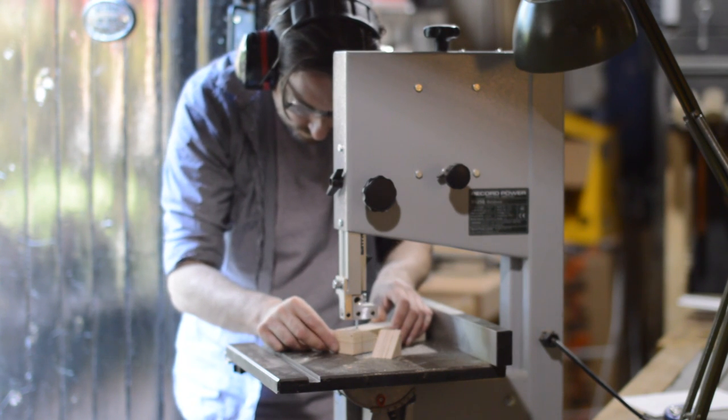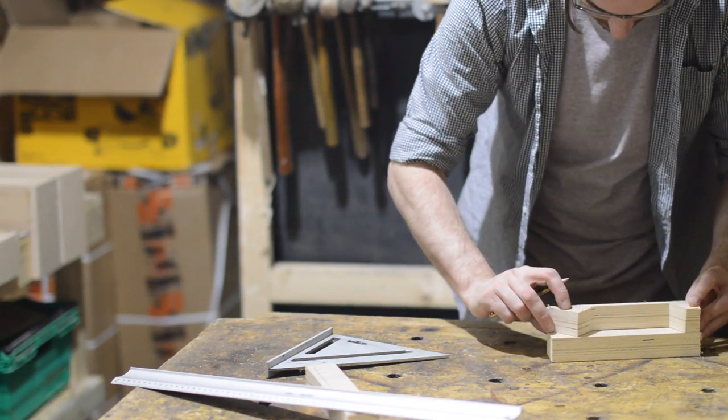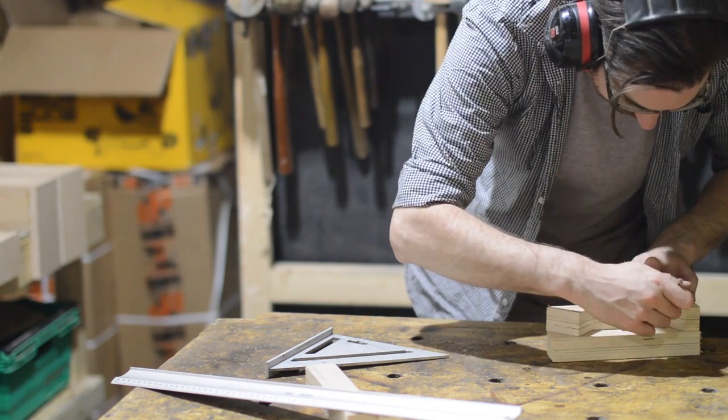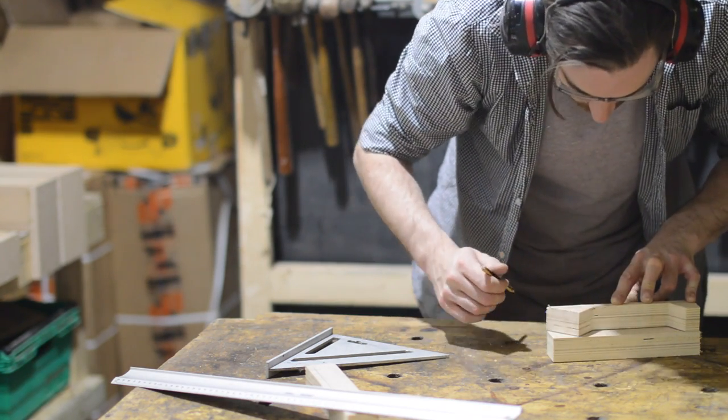I think to apply enough clamping pressure to my project I need four of these, so after I've got the first one cut out I can then use it as a template to draw onto the others. The angles don't have to be perfect, they're only to give you something to clamp onto.